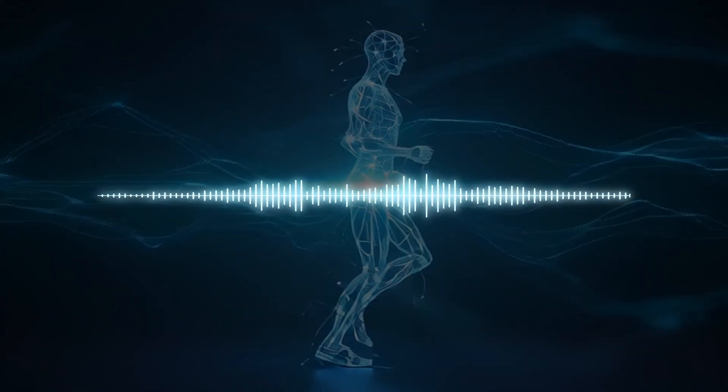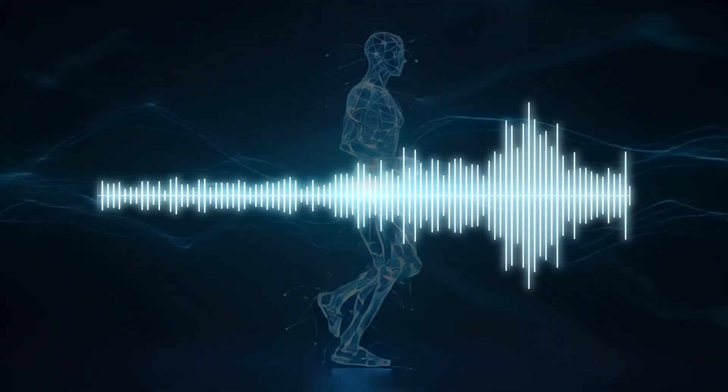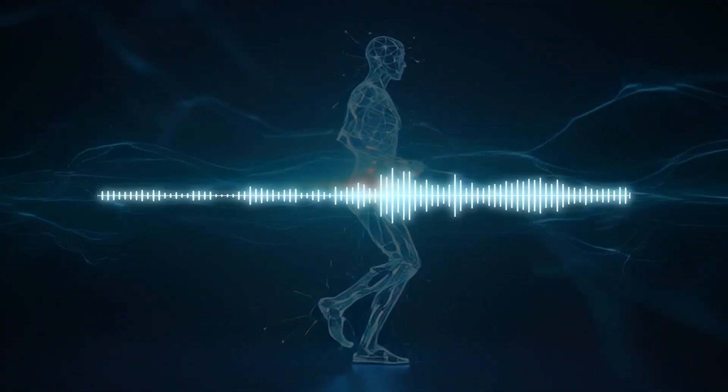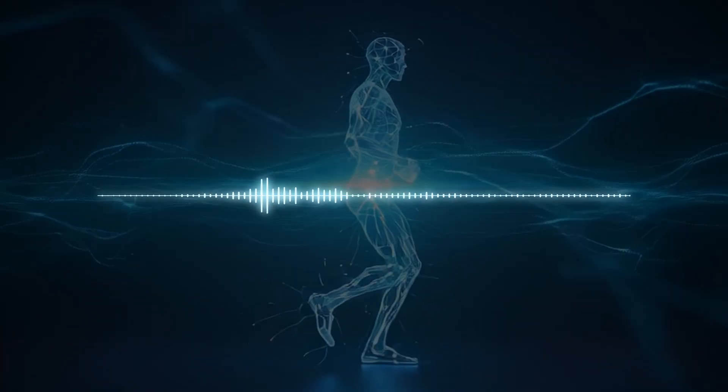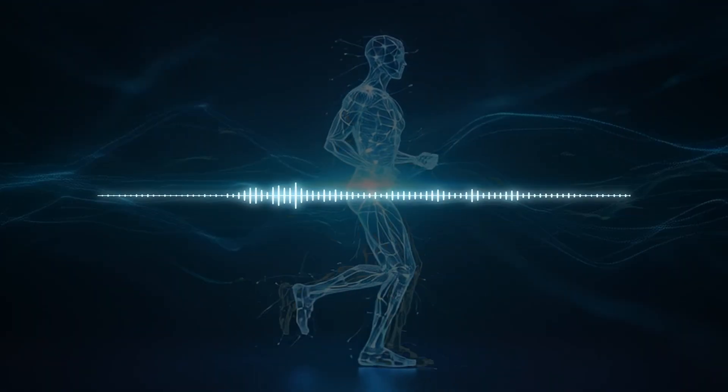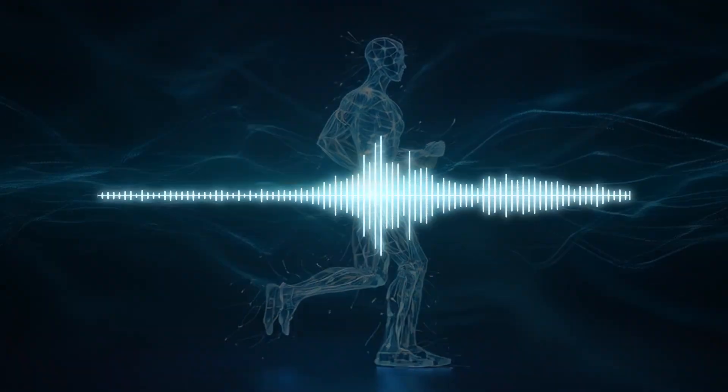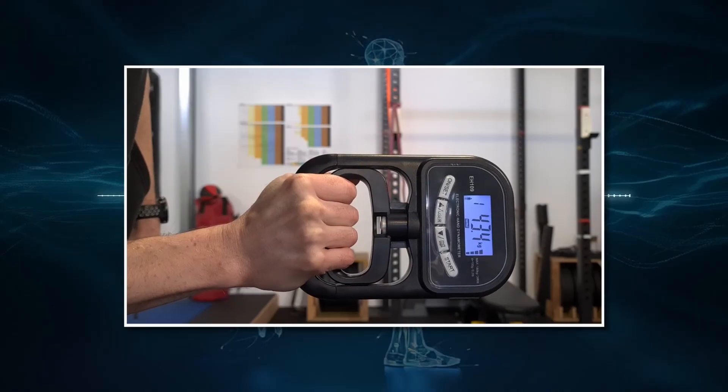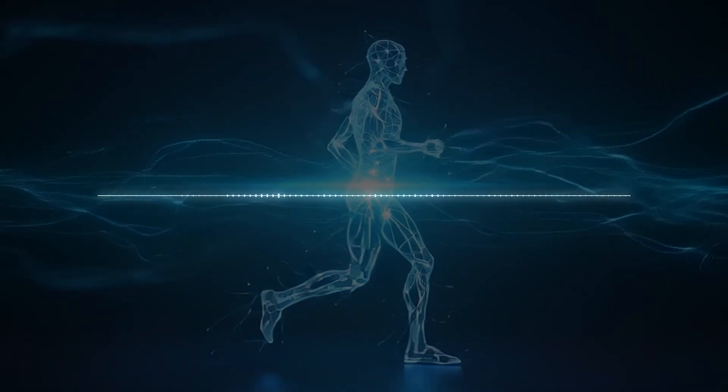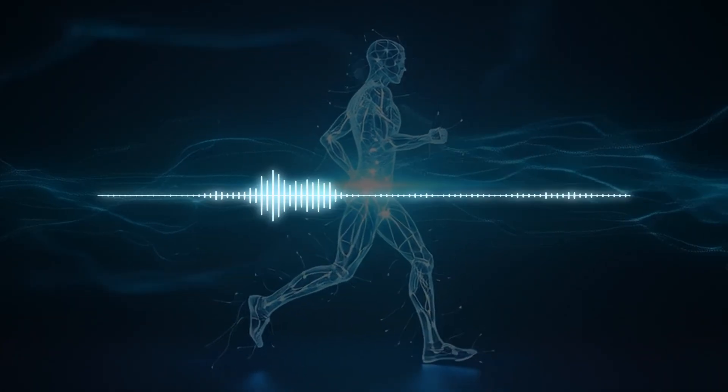Third, coordination training focusing on force transfer optimization. The researchers emphasize exercises that enhance agonist-antagonist cooperation, essentially teaching your body to coordinate the complex sequences that turn leg power into devastating punch impact. But here's what most programs miss. Grip strength training. The researchers found this directly correlates with punch impact, yet it's often overlooked. You can't transfer power through weak links in your striking chain.